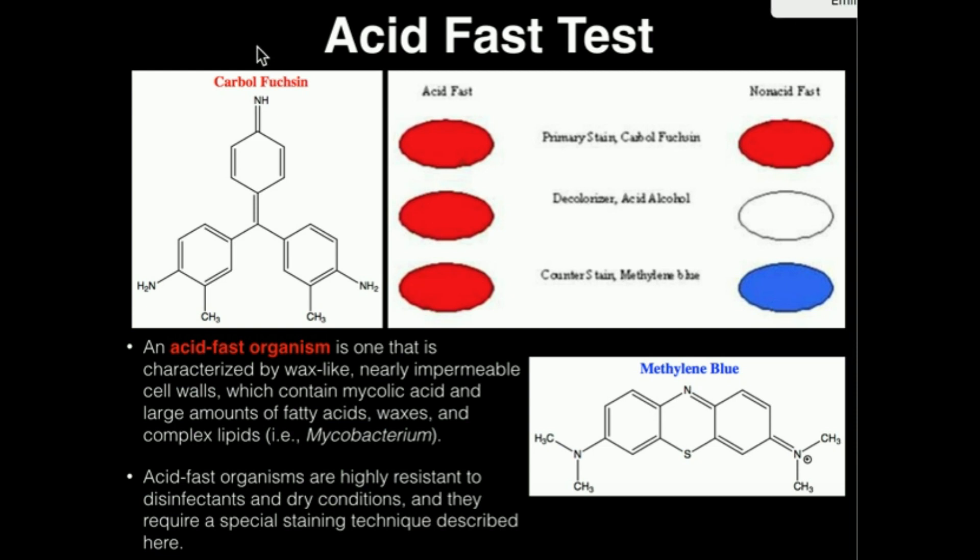So what is an acid-fast organism? An acid-fast organism is one that is characterized by wax-like, nearly impermeable cell walls, which contain mycolic acid and large amounts of fatty acids, waxes, and complex lipids.